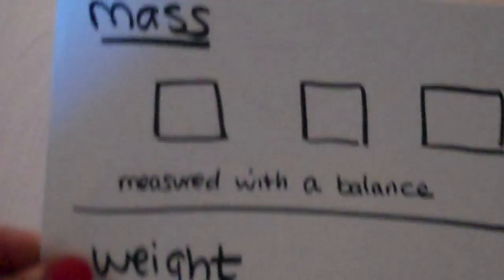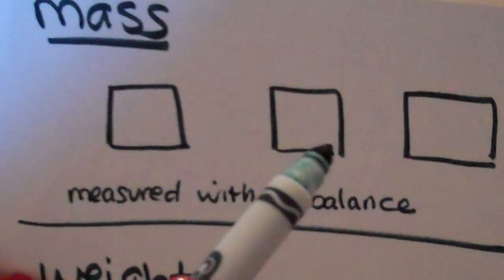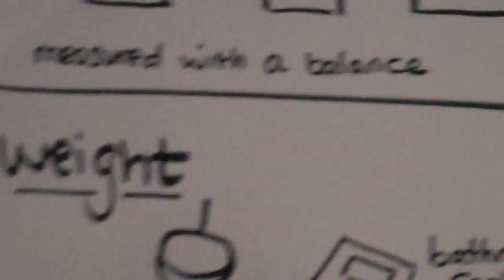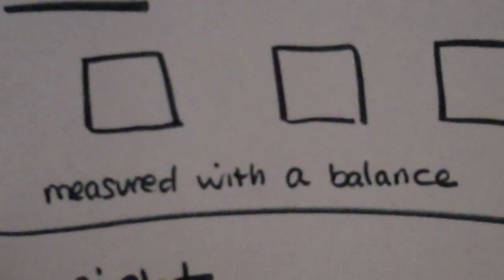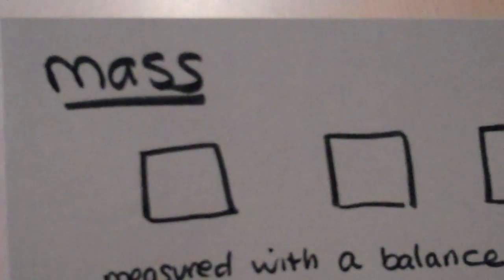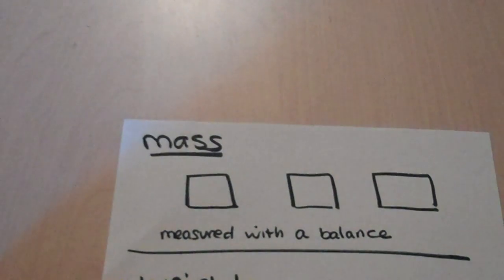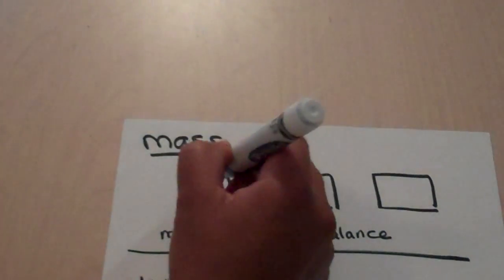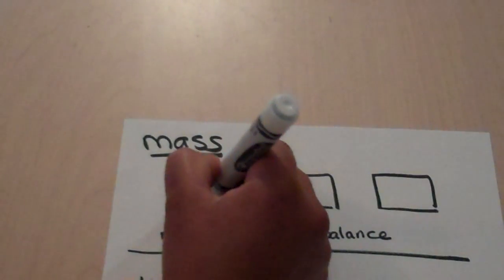Mass versus weight. Now I have these squares right here, and I'm going to fill them in with some circles, because first of all, let's just go over that term. Mass is the amount of matter in an object. Mass is the amount of matter in an object, and it's measured with a balance.